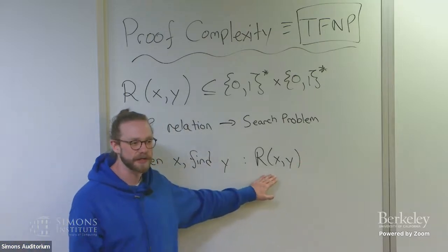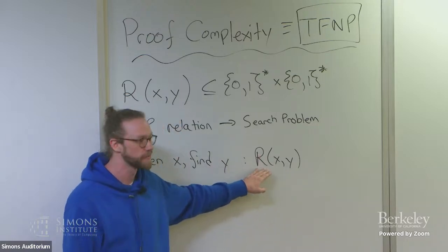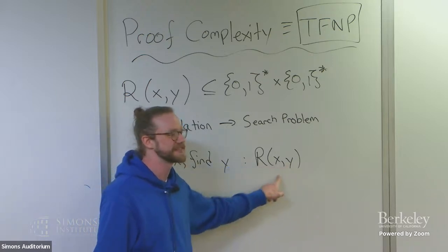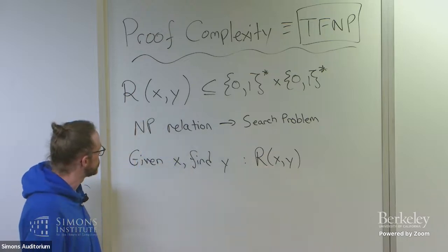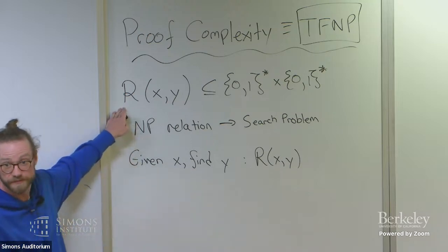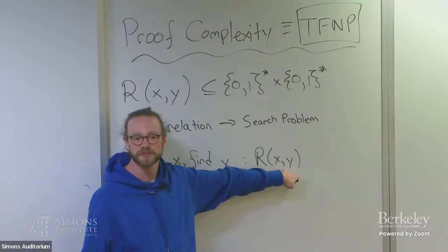And of course, this is like the standard complete problem for function NP. If I take R to be given x is a CNF formula and y is a satisfying assignment, this is like the complete problem for FNP. So it turns out to be interesting to ask the question about what happens if this relation is total. By total, I mean for every x there is a y such that the relation holds.